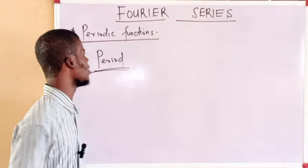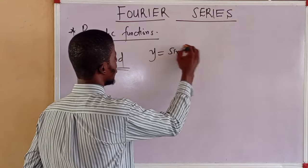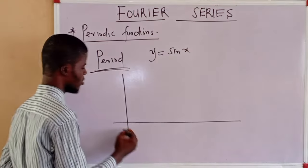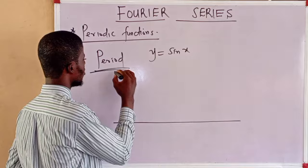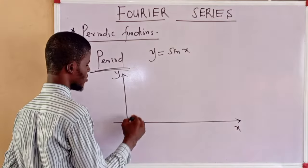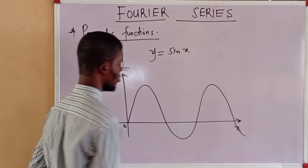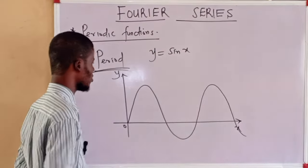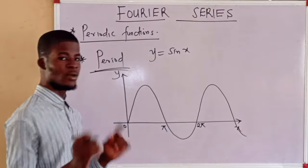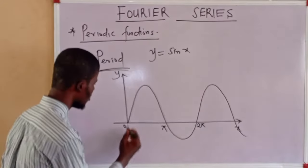Let's consider the sine graph: y = sin(x). Let me try to sketch the waveform. This is the origin (0,0), the y-axis and the x-axis. The sine graph looks like this — and so on. We have 0, we have π, we have 2π. This is the waveform and the pattern started from here.